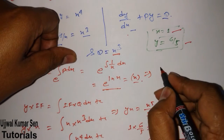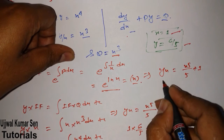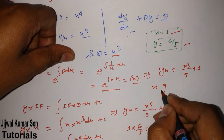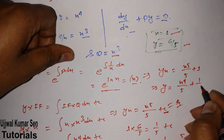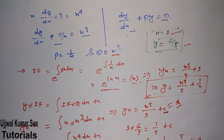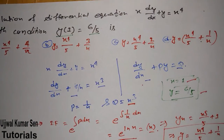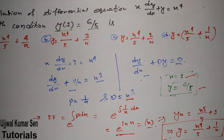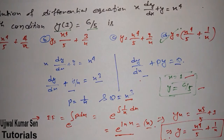We can now rearrange: yx = x to the power 5 by 5 plus 1. Sending x to the other side: y = x to the power 4 / 5 + 1/x. This is the solution we get. We have to match this with the given options — look at option D, which gives the same answer. So option D is correct for this question.